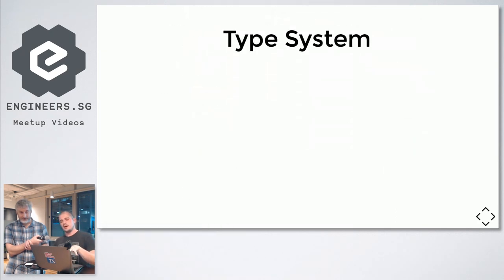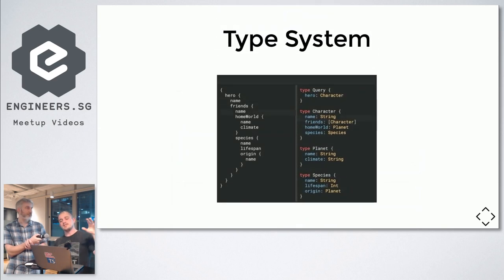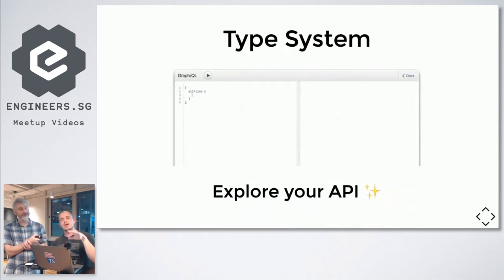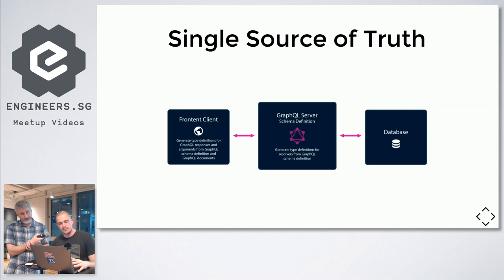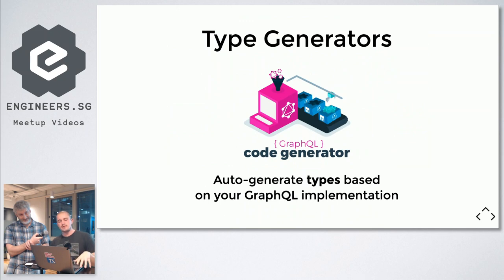TypeScript has a strong type system, and that's good because we are going to have a typed and introspectable contract between our server and our client. The GraphQL specification is introspectable, so we can see all the fields available in our API. Our GraphQL schema is going to be our single source of truth, and we want to extend our types to both our back-end and front-end. We want to achieve end-to-end type-safe applications. We're going to use a types generator called GraphQL Code Gen, an open-source tooling that auto-generates types based on our GraphQL implementation for both back-end and front-end.